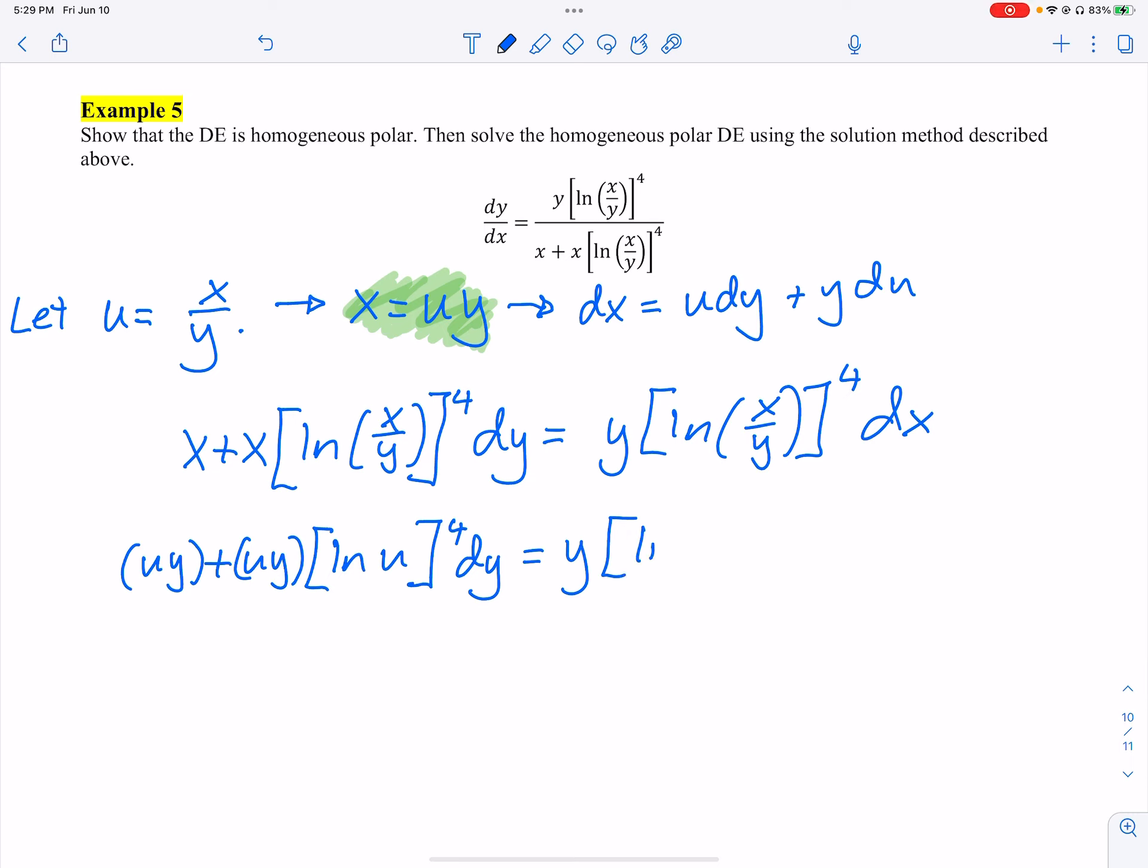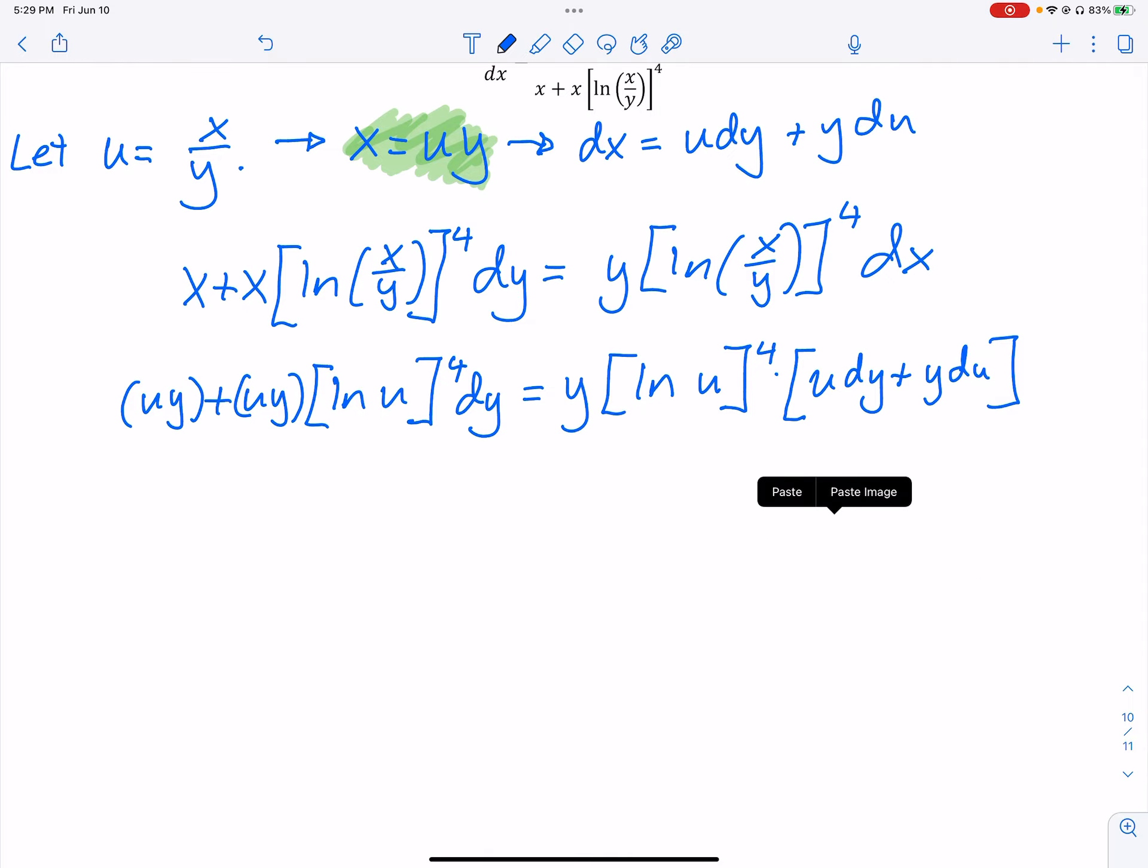Make all our adjustments. Everywhere there is an x, I have to put a u y. I can replace thankfully these x over y's with just a u. dy is something I can have, that's okay. But dx I'm going to go ahead and replace. I got y times ln of u here, this one to the fourth power.